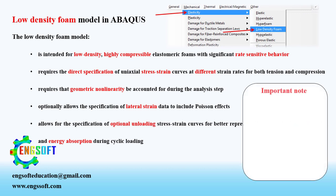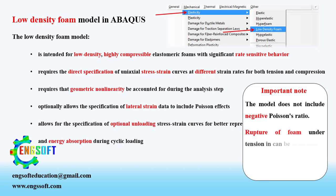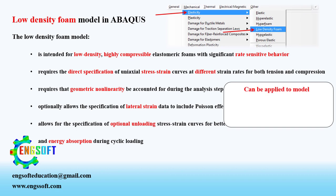Important note: the model does not include negative Poisson's ratio. You can simulate rupture of foam under tension in Abacus Explicit using this model. The low-density foam model can be applied to model low-density polymeric foam materials, especially polyurethane foam.